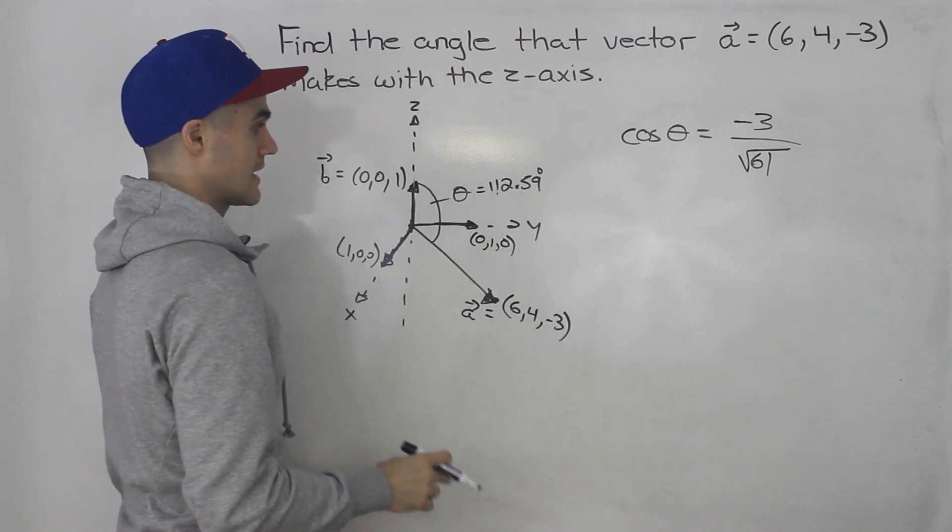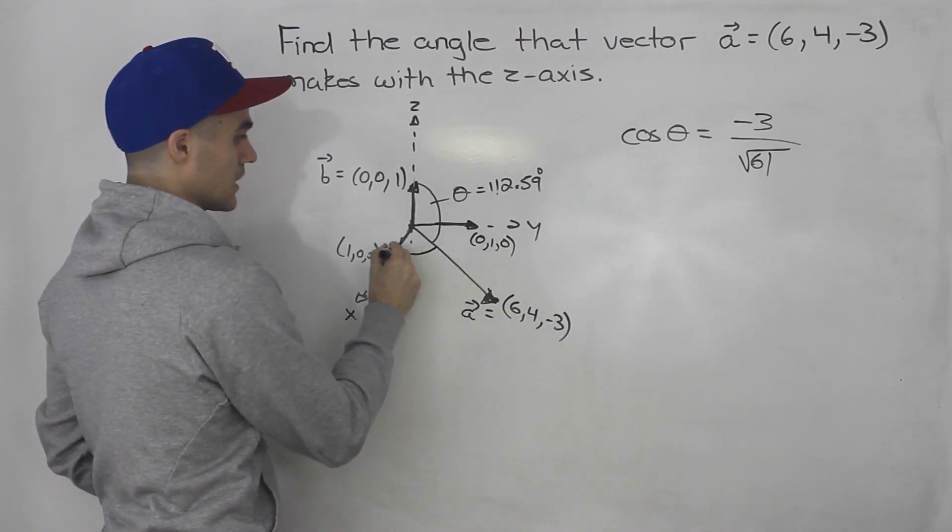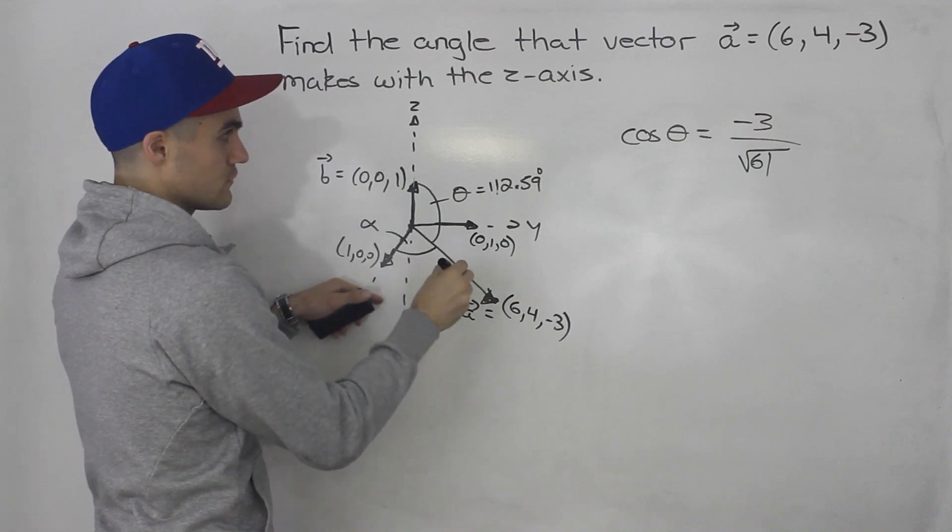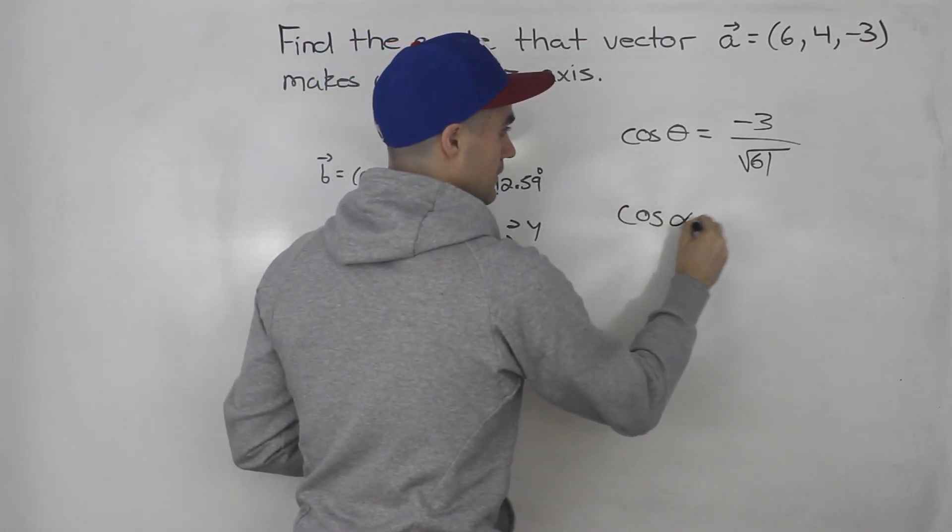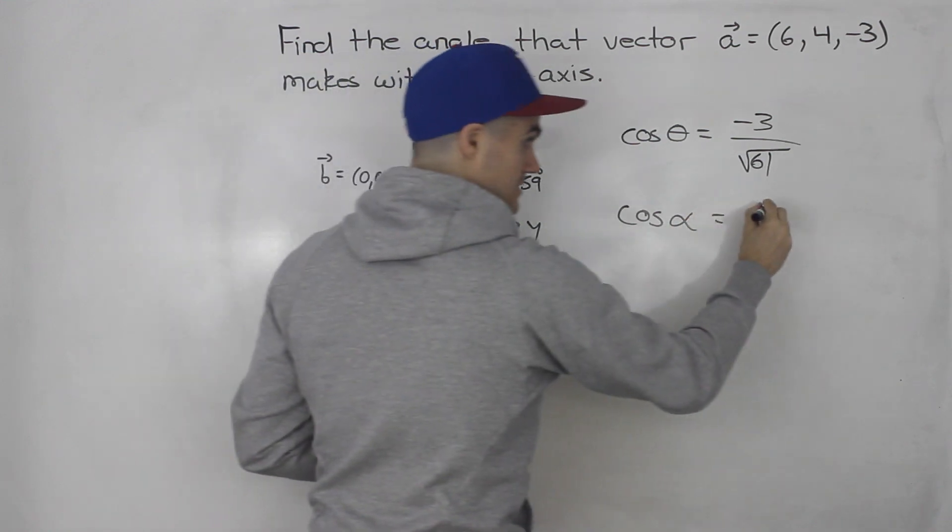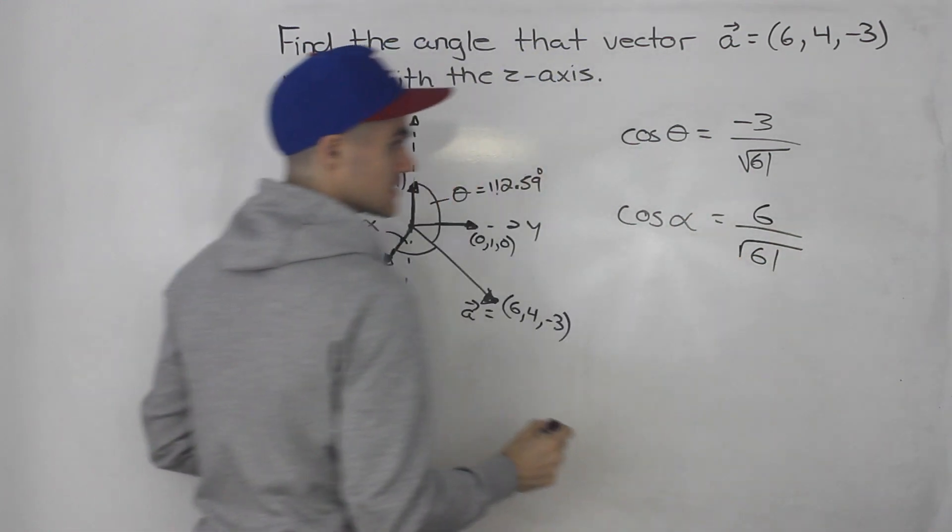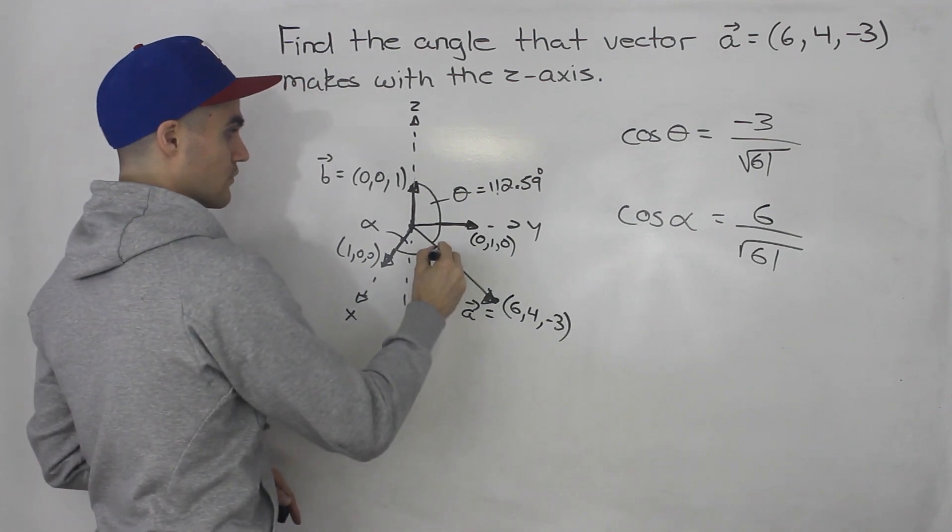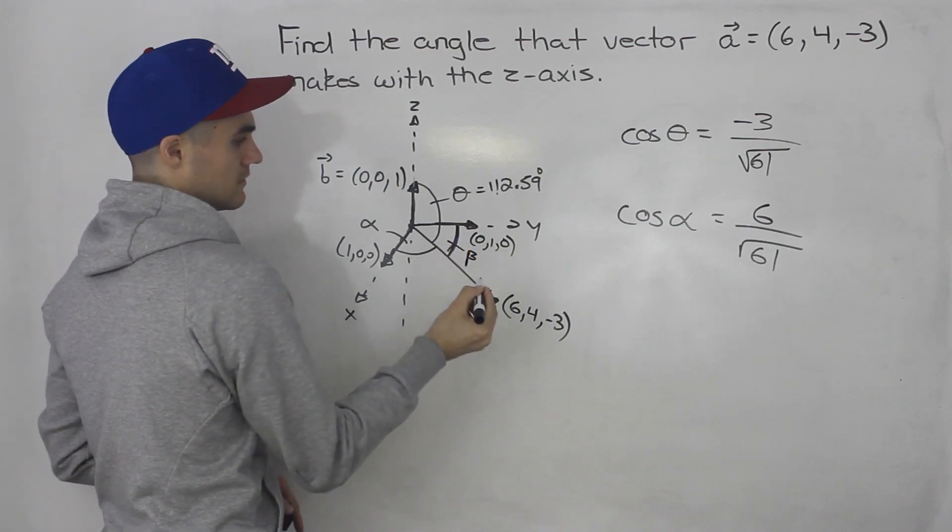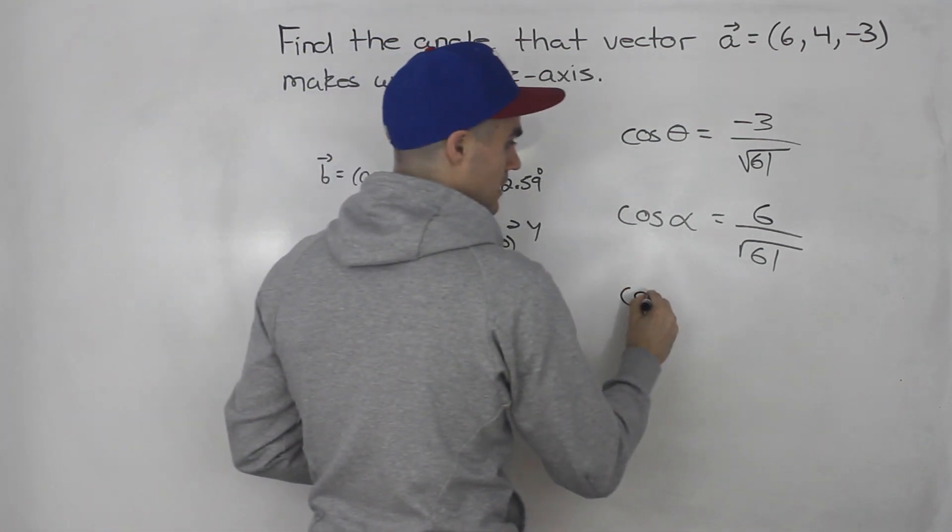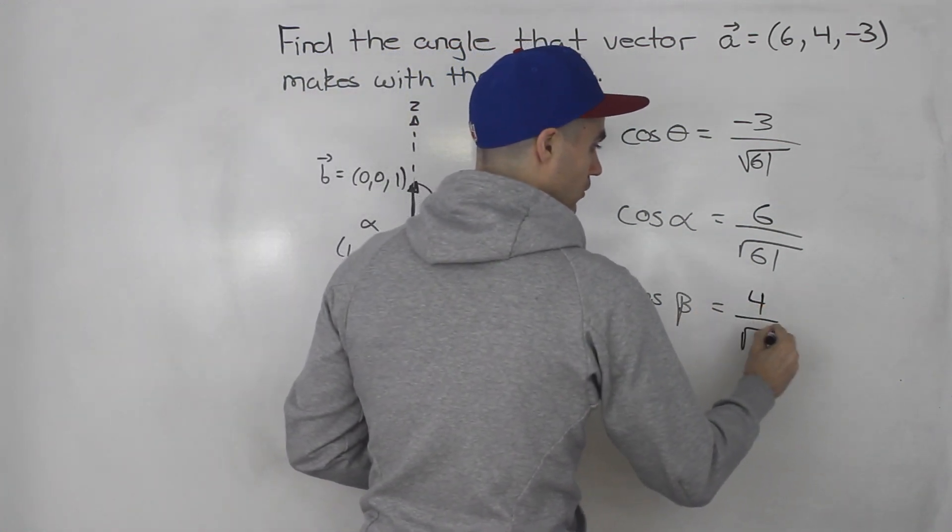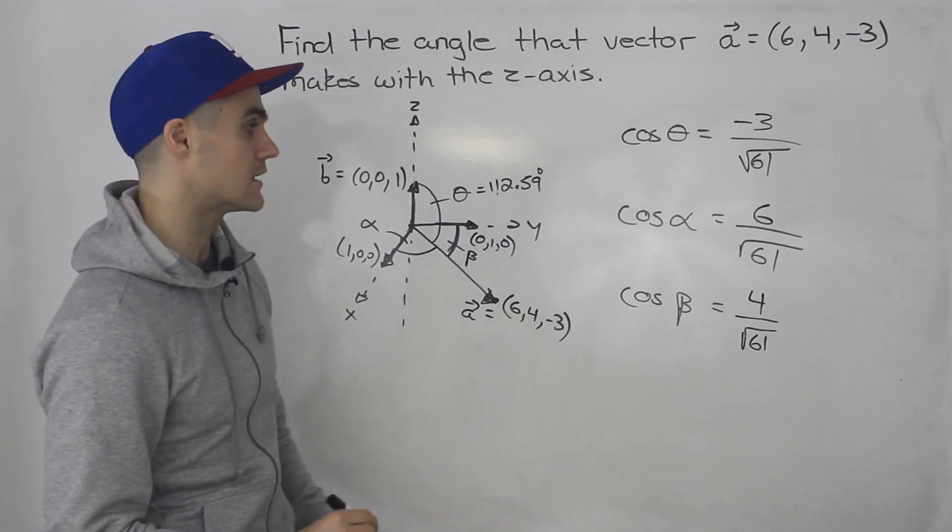Right? So we'll always be this. Now, what if we were looking for the angle between the vector and the x-axis? So let's call it alpha. So instead of doing the whole dot product between the two vectors, we can just say cos of alpha. Because we're looking for the angle between the vector and the x-axis, we would take the x-component. So 6 over the magnitude of that vector, root 61. Or if we were finding this right here, let's call it beta, angle beta. So between the vector and the y-axis, so cos of beta would be the y-component, 4 over root 61. And then you would just inverse cos all of those to get the angles.